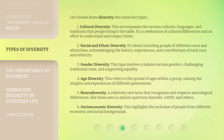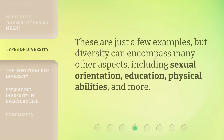Third, gender diversity — this involves a balance across genders, challenging traditional roles and supporting equality. Fourth, age diversity — this refers to the spread of ages within a group, valuing the insights and experiences of different generations. Fifth, neurodiversity — a relatively new term that recognizes and respects neurological differences, like those seen in autism spectrum disorder, ADHD, and others. Sixth, socioeconomic diversity — this highlights the inclusion of people from different economic and social backgrounds. These are just a few examples, but diversity can encompass many other aspects, including sexual orientation, education, physical abilities, and more.